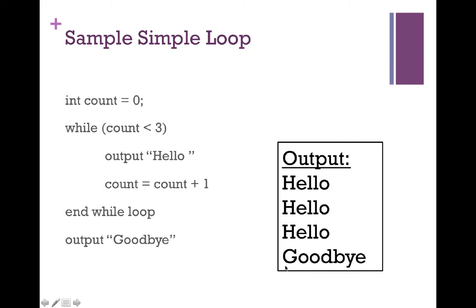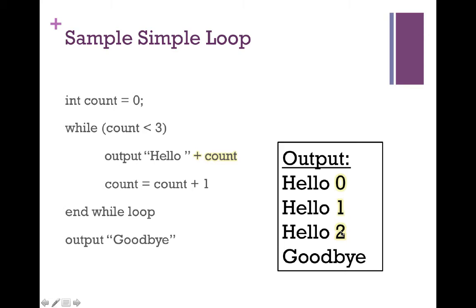One way that you can help visualize the different values in count is to actually print out what's inside of your loop control variable. By adjusting our program just a bit, you can see the first time through count is 0, then 1, then 2, then count turns to 3, our condition turns to false, and we exit out of our loop and finally print goodbye.